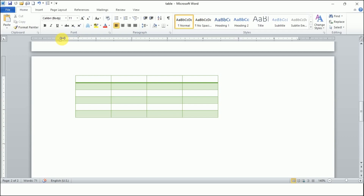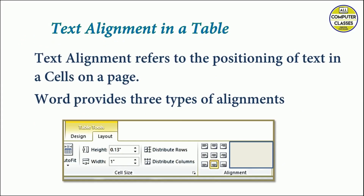I hope you are clear on how to apply left, right, and center alignment to a table. Next is text alignment in a table — how we can align text inside the table. When you click or select your table, you get the Table Tools tabs: Design and Layout. When talking about the structure of the table, it is always in the Layout tab. Here we have alignment options that can be applied to text inside the table.